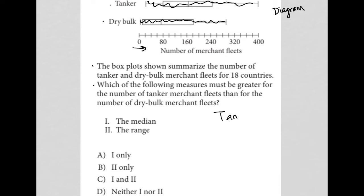So the next sentence says, which of the following measures must be greater for the number of tanker merchant fleets than for the number of dry bulk? So tanker greater than dry bulk, right? Which measures do we care about? Well, choice one here is the median.